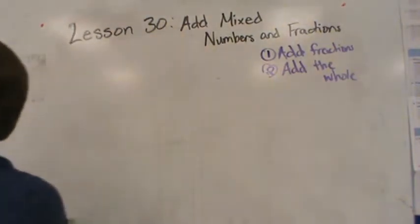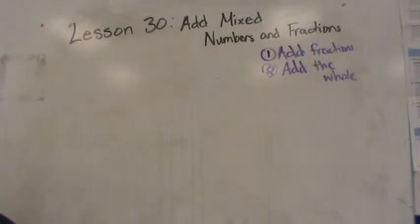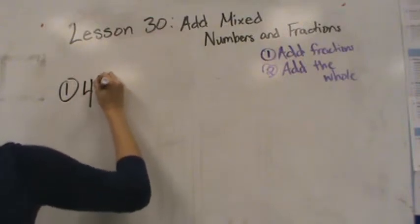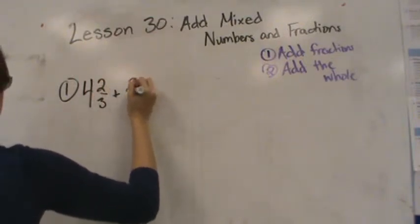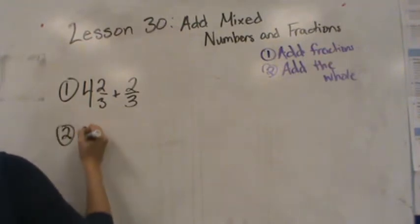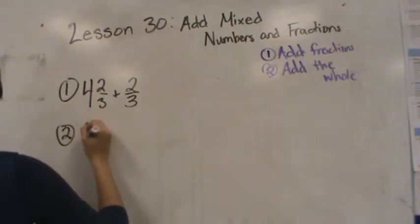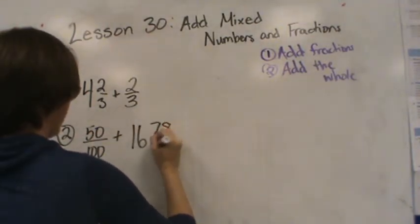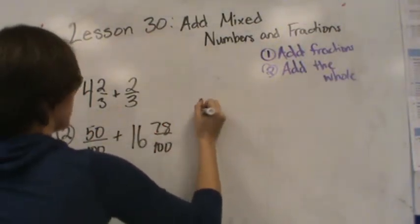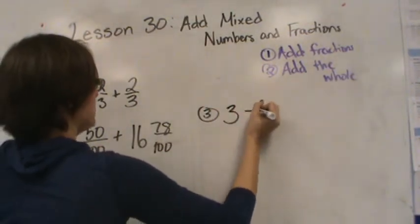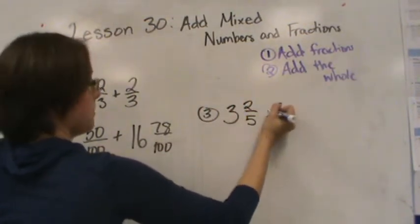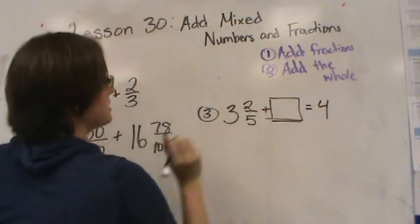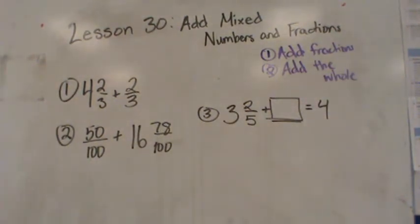Here are your three problems to work on tonight. The first one: four and two thirds plus two thirds — remember, convert to a mixed number first if necessary. The second one: fifty hundredths plus sixteen and seventy-eight hundredths. The third one is a fill-in-the-blank: three and two fifths plus something equals four — figure out what goes in that blank. Keep up the hard work and I will see you later!